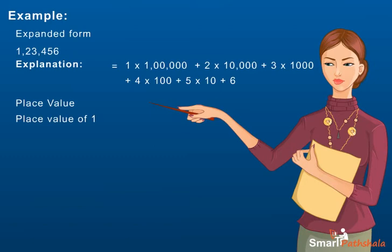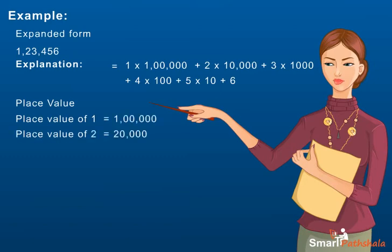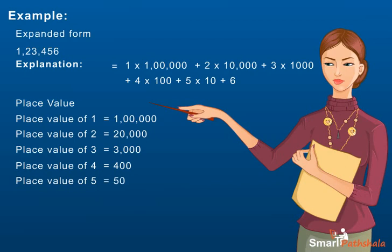the place value of 1 is 1 lakh, 2 is 20,000, 3 is 3000, 4 is 400, 5 is 50 and 6 is 6.